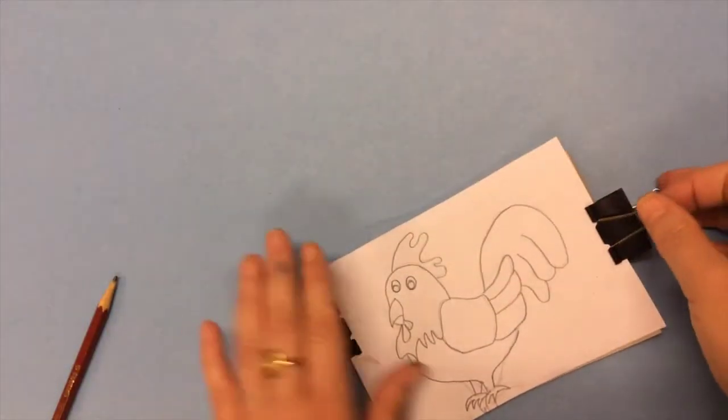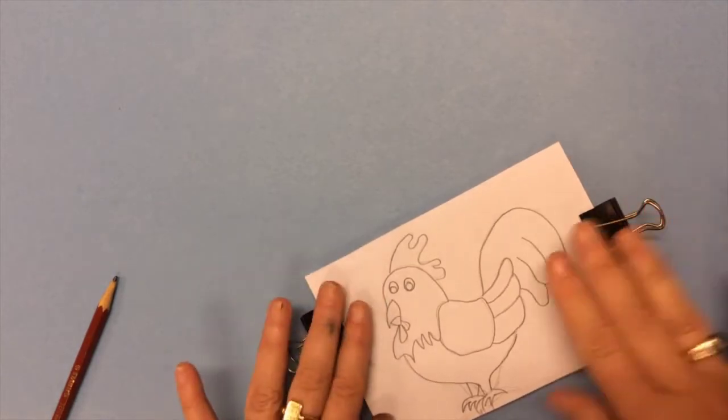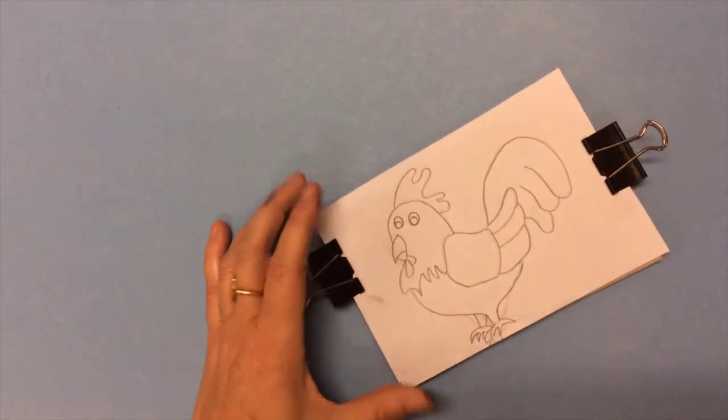You're going to take a pencil, probably one that's not too sharp so it doesn't cut through the paper, and then you're simply going to trace over the image one more time.